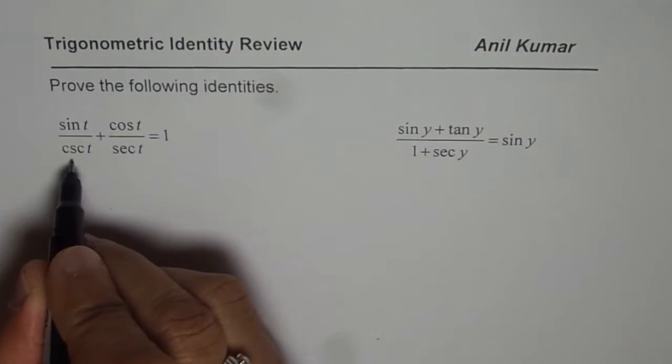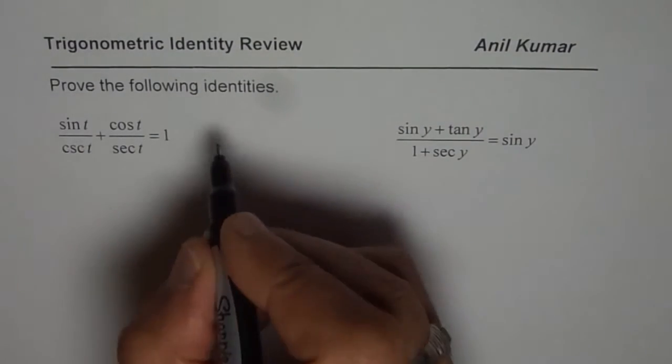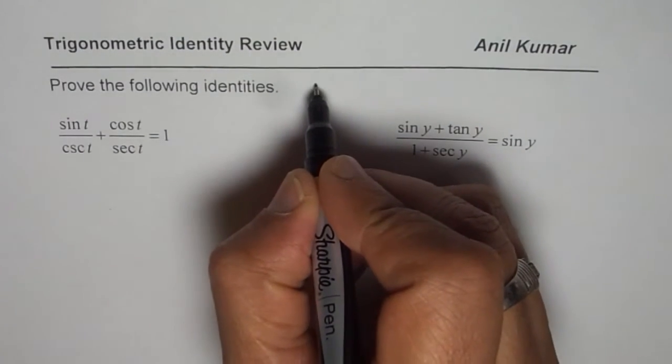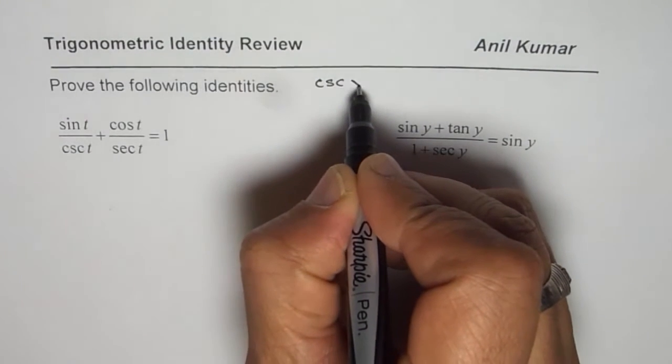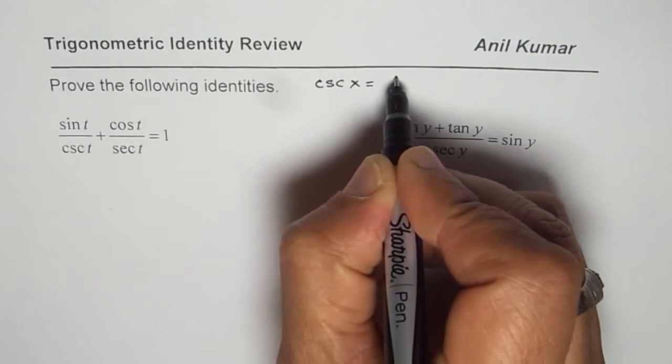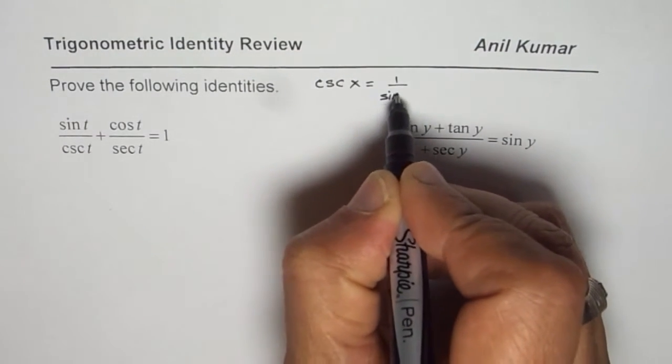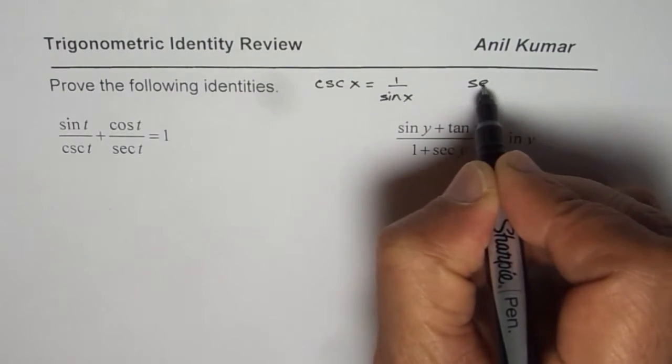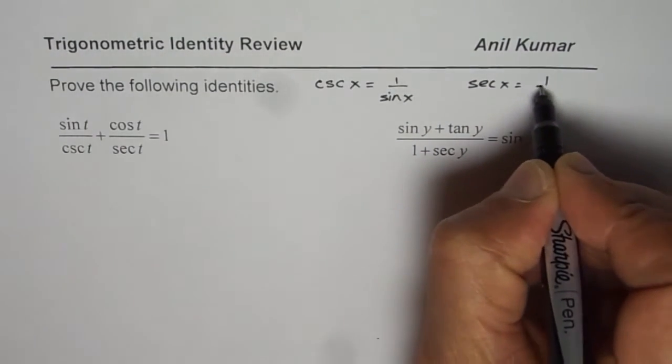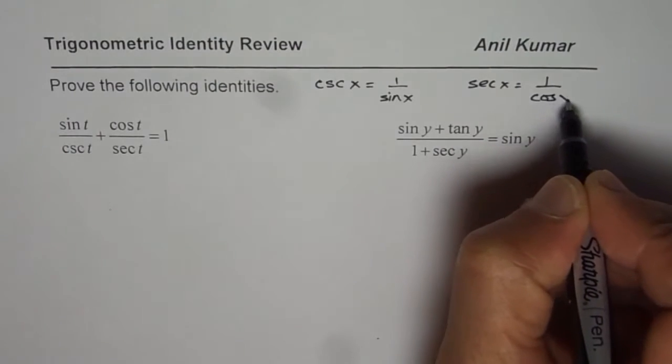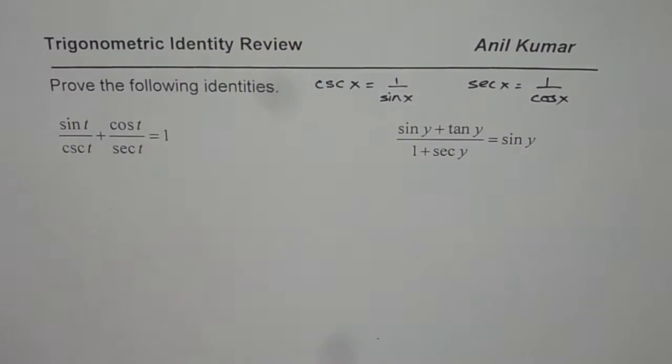Now, what is cosecant x equals to? Let me write down here before we begin solving. Cosecant, I'm writing in terms of x, is 1 over sine x. And secant x is 1 over cos x. So we'll apply this in proving the given identities. That is the whole idea.